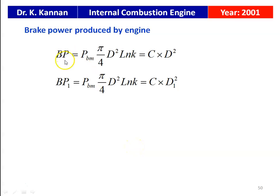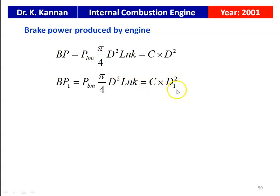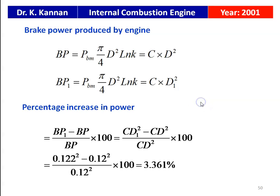For the brake power calculation, BP equals brake mean effective pressure × (π/4)d² × L × n × k. Since diameter is the only parameter varied, BP equals c × d². For the rebored engine, BP1 equals c × d1². The percentage increase in power equals (BP1 − BP) / BP × 100 = (d1² − d²) / d² × 100: (0.122² − 0.12²) / 0.12² × 100 equals 3.361 percent. So the increase in power is 3.361 percent.